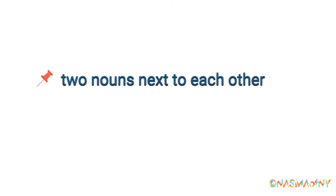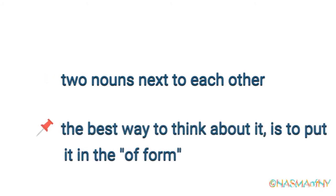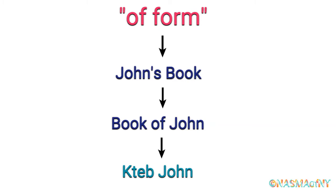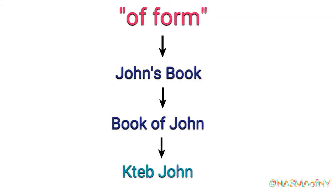What is genitive construction? Two things to keep in mind. There are two nouns next to each other, and the best way to think about it is when you put it in the 'of' form. For example, John's book becomes 'Book of John.' In Arabic, that becomes Kitab John.